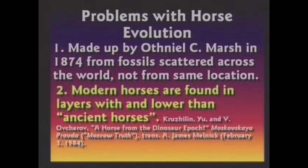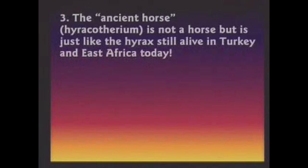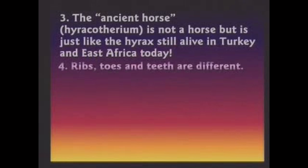Modern horses have been found in the same layers and lower than the so-called ancient horse. The ancient horse is not a horse at all — it's a hyracotherium. It's like the hyrax, still alive in Turkey and East Africa today. The ribs, toes, and teeth are different on these animals.